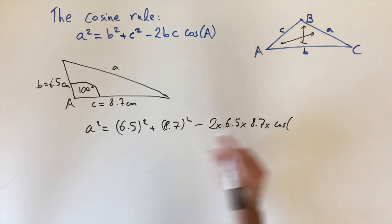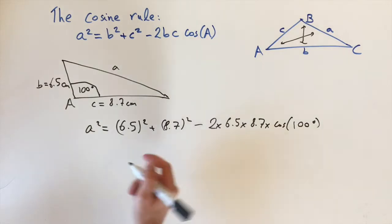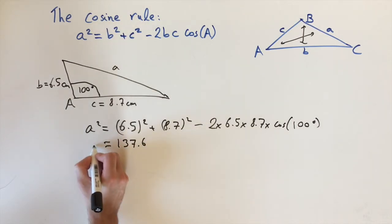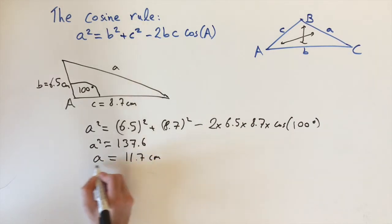This is 100 degrees, so if we plug this into a calculator, this gives us approximately 137.6. This is what a squared is, and then to find a we just take the square root, which gives us approximately 11.7 centimeters. So we worked out the missing side.